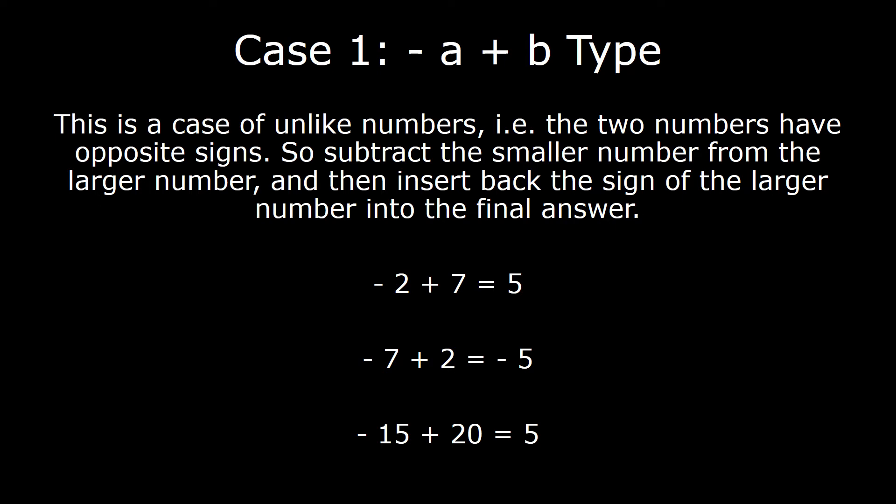So whether you use the number line or you use this method, the answer you would get is 5, and this is logically clear as well. Let me give you another example. What if you had minus 7 plus 2? On the number line, you would start way left from 0 at minus 7, and then you would need to go 2 units to the right because it's a plus 2 and positive direction is rightwards. So you go to minus 6, minus 5.